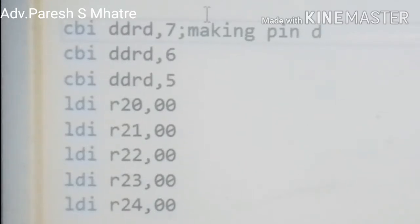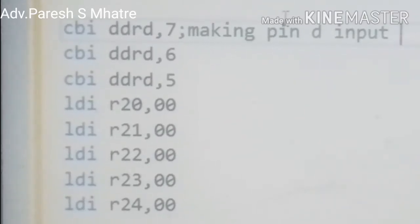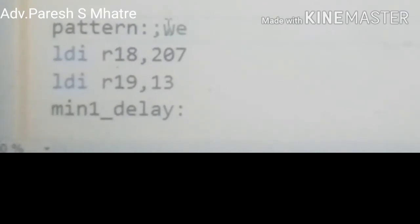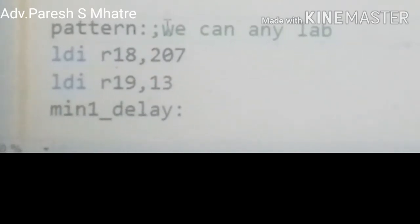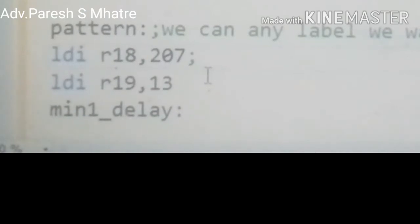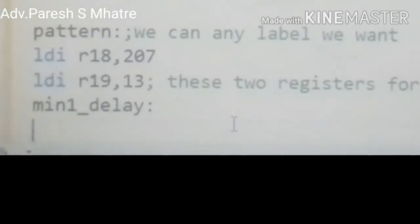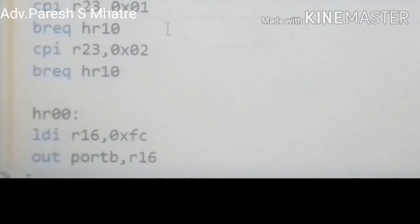R22 and R23 are our hour registers, and R20 and R21 are our minute registers respectively. We initialize them with the value 0. This is our main loop of one minute — we have given it the label 'pattern'. We started with the value 207 for register R18 and 13 for R19. We start with the comparison of register R23, which is our hour register for the tens place.